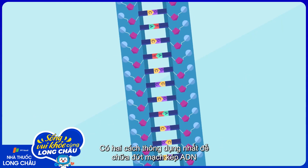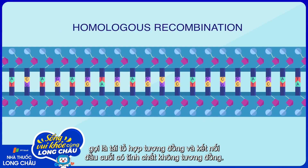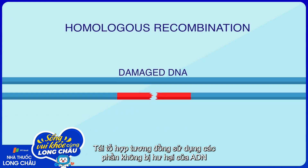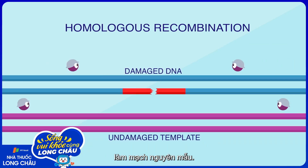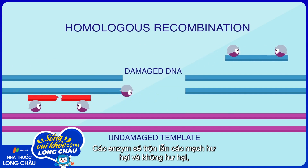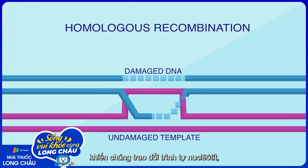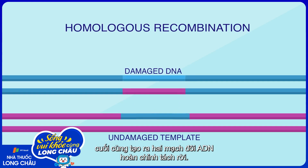The two most common pathways for repairing double strand breaks are called homologous recombination and non-homologous end joining. Homologous recombination uses an undamaged section of similar DNA as a template. Enzymes interlace the damaged and undamaged strands, get them to exchange sequences of nucleotides, and finally fill in the missing gaps to end up with two complete double-stranded segments.